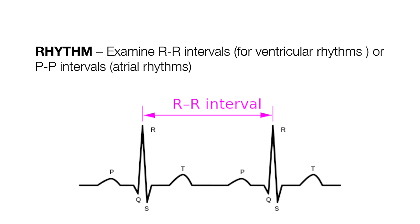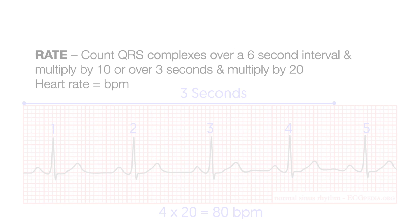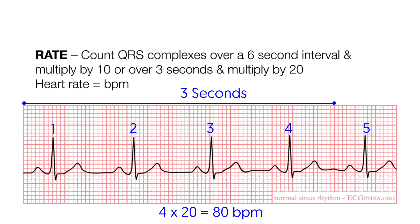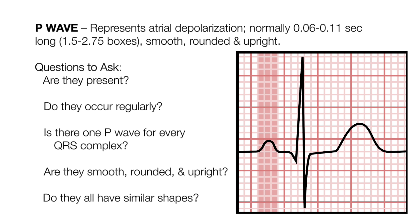There are eight steps to interpreting an EKG. First, look at the rhythm — examine the R to R intervals for ventricular rhythms, or the P to P intervals for atrial rhythms. Second, look at the rate: count the QRS complexes over a 6-second interval and multiply by 10, or over 3 seconds and multiply by 20, and your heart rate will be in beats per minute. Third, assess the P wave, which represents atrial depolarization and is normally 0.06 to 0.11 seconds long, or 1.5 to 2.75 boxes. It's smooth, rounded, and upright. Ask yourself: are they present? Do they occur regularly? Is there one P wave for every QRS complex? Are they smooth, rounded, and upright? And do they all have similar shapes?